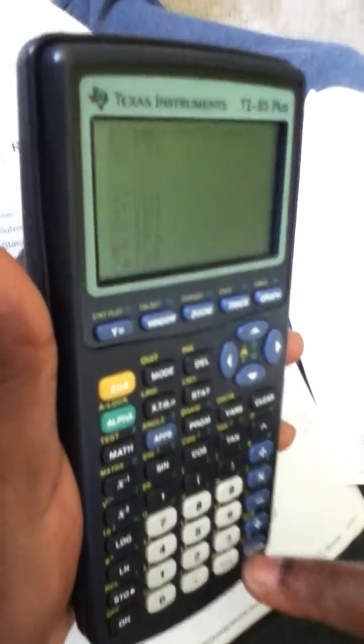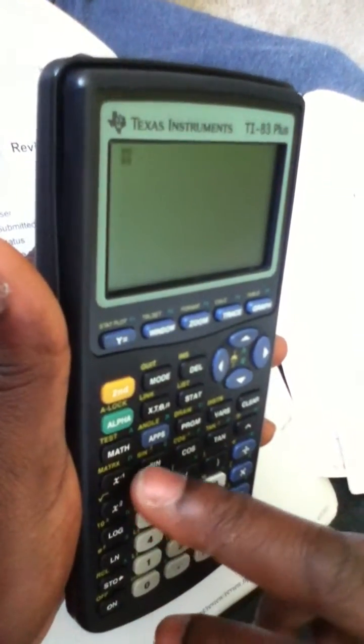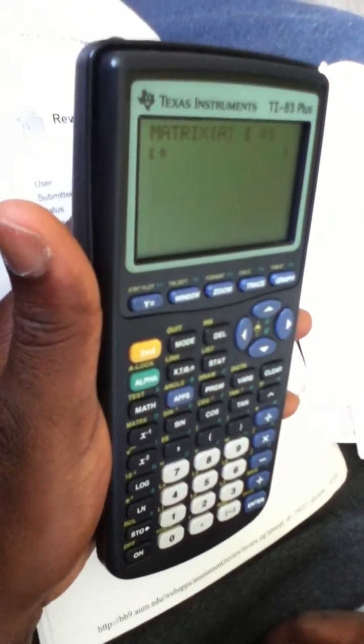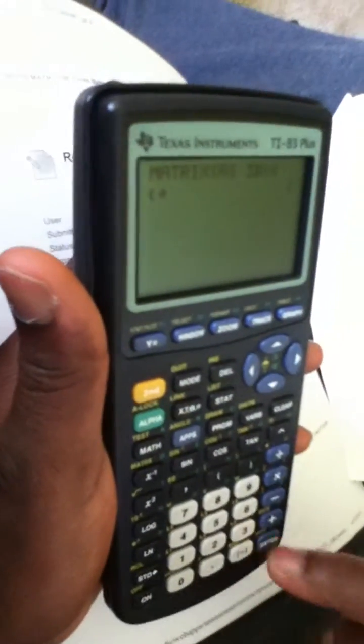You go to Matrix, you go to Edit, now you type a number of rows and columns. Say we have a 3 by 3, so that's a 3 by 3.